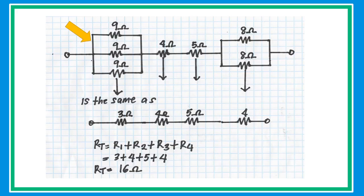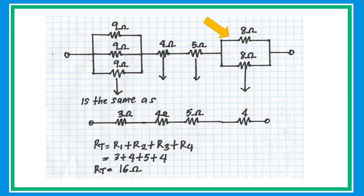The next example looks complex, but with a few tricks and techniques it's very simple. First, the three 9 ohm resistors are connected in parallel with the same value, so divide 9 by 3 to get an equivalent resistance of 3 ohms. Next, since the two 8 ohm resistors are the same value in parallel, take half of 8 to get 4 ohms. The circuit is now a simplified series circuit. Using RT = R1 + R2 + R3 + R4, substitute and add the individual resistors to get a total equivalent resistance of 16 ohms.